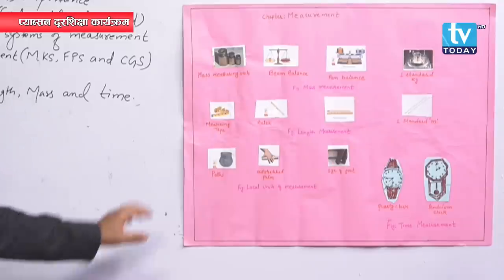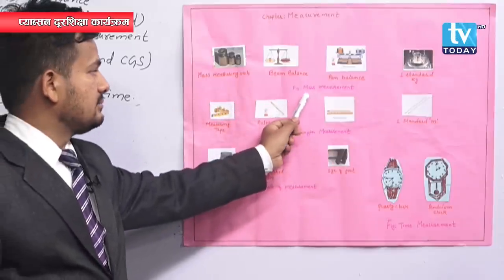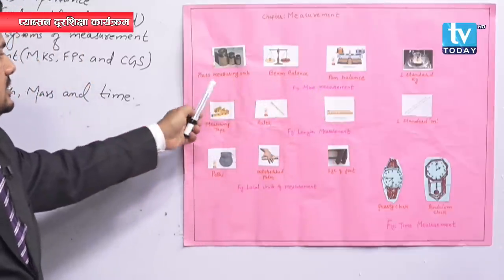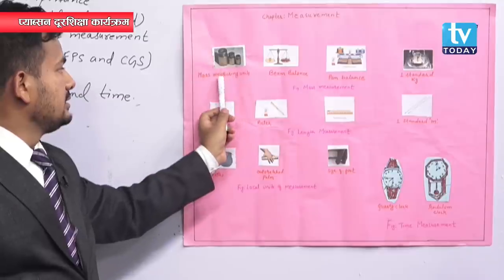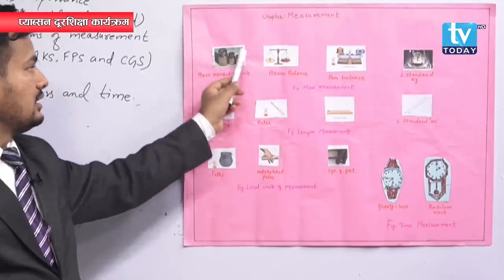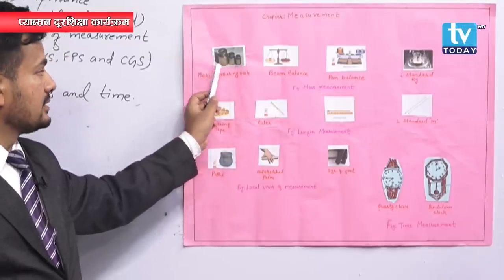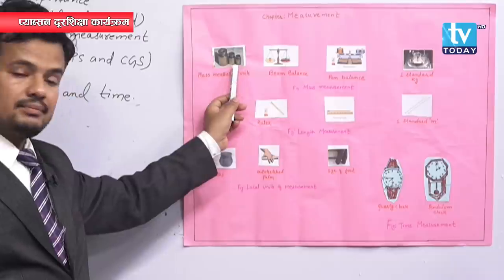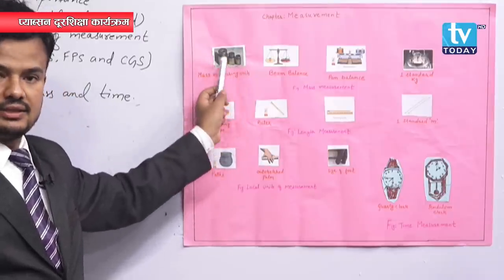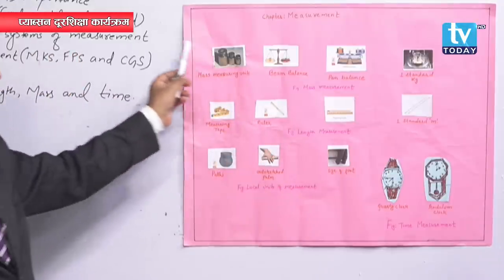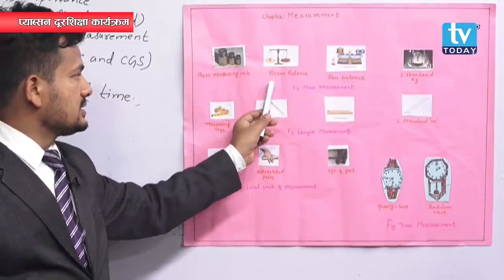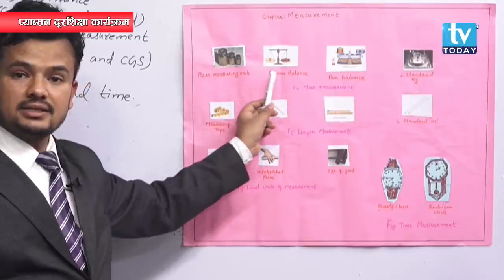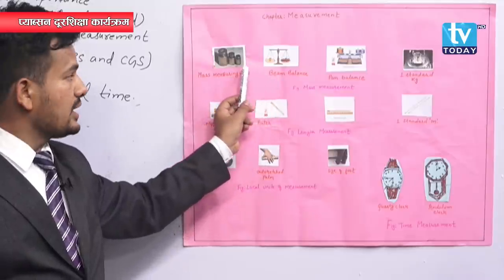Measurement of mass — there are different units and different devices that can measure mass. I have mentioned here some examples. Mass measuring units: you have all seen these around you in grocery shops — one kilogram unit, half kilogram unit, 200 gram, and so on. There are different types of mass measuring units that people commonly use. The next one is the beam balance, also called a physical balance, which is used to measure the mass of a body. How can you measure the mass of a body?